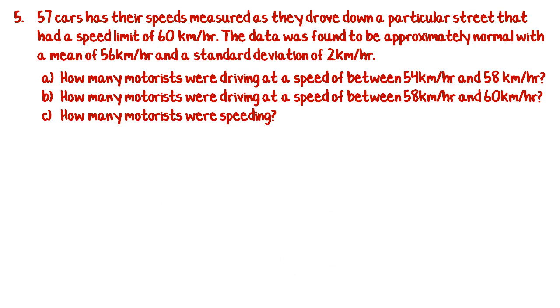Question 5. 57 cars had their speeds measured as they drove down a particular street that had a speed limit of 60 km an hour. The data was found to be approximately normal with a mean of 56 and a standard deviation of 2.